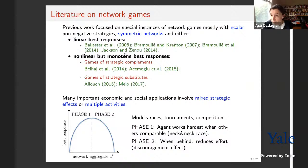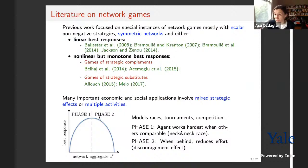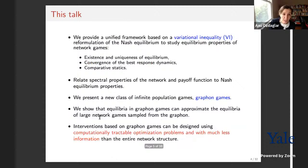However, many economic and social applications involve mixed strategic effects — best responses are not always monotone — or multiple activities, where you want to exert effort on more than one activity. A simple illustrative example of a non-monotone best response is a model of races, tournaments, or competition where agents work hardest when others have similar effort levels, capturing a neck-and-neck race, but then effort goes down due to a discouragement effect when falling behind.